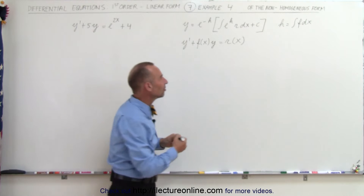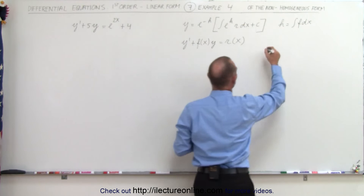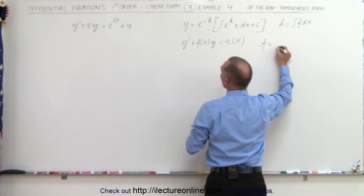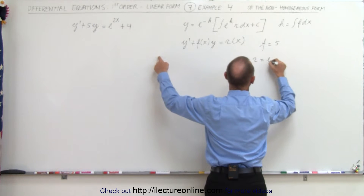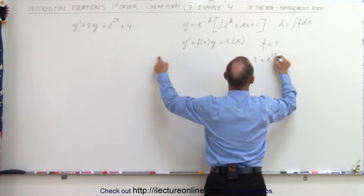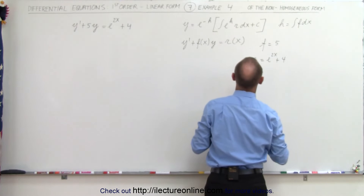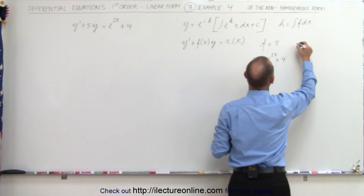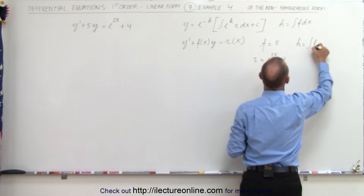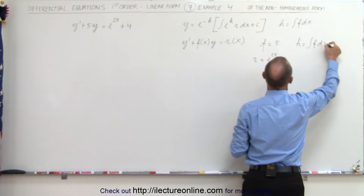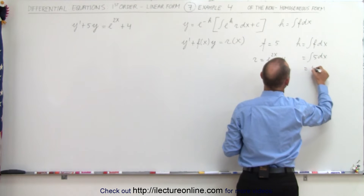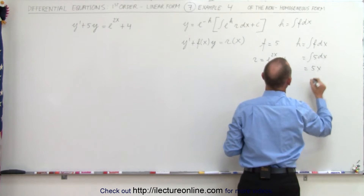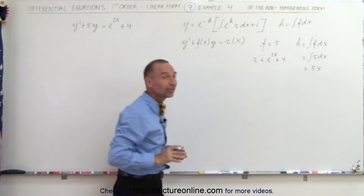So let's go ahead and identify what these are. In our example, f is equal to 5, r is equal to e to the 2x plus 4, and h is equal to the integral of f dx, which is the integral of 5 dx, which equals 5x. So h is 5x.